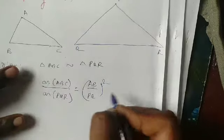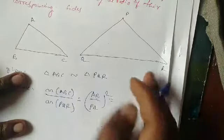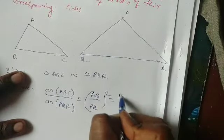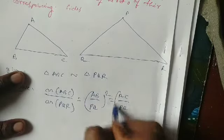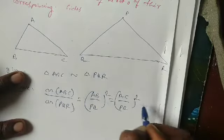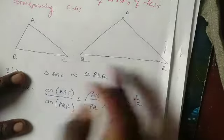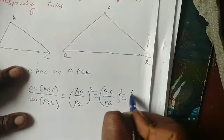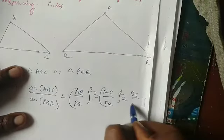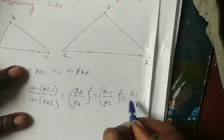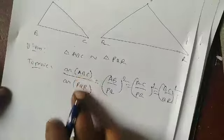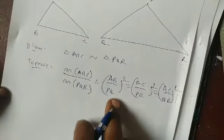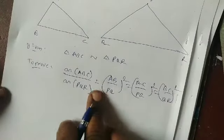Is equal to (AC/PR) squared, is equal to (BC/QR) squared. That is the ratio equal to the ratio. I will prove this.